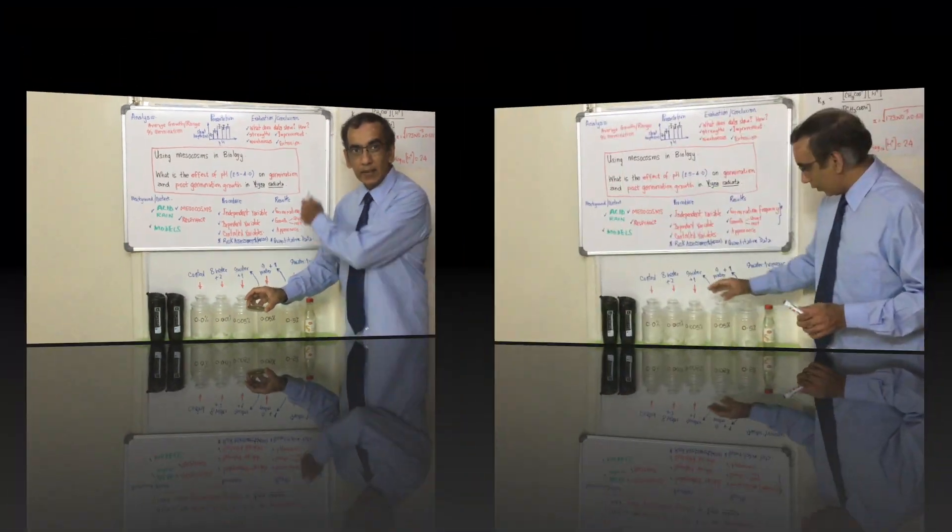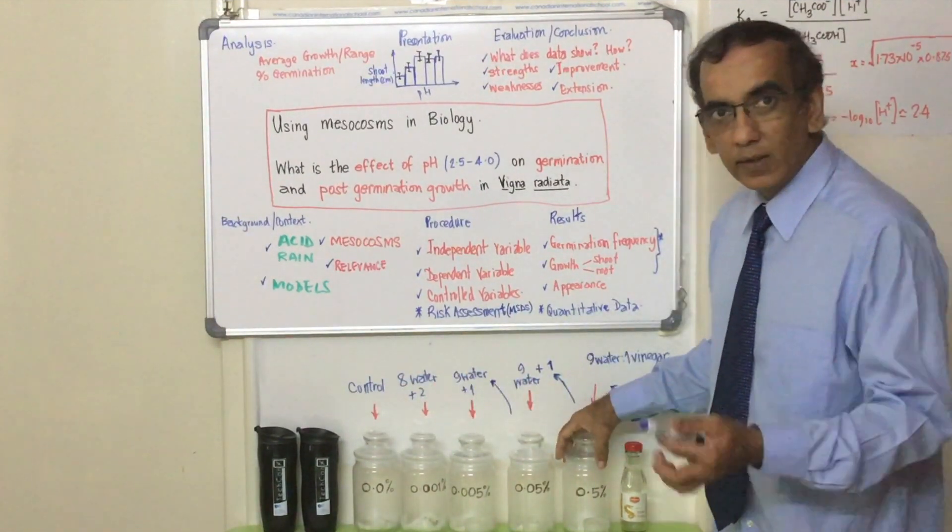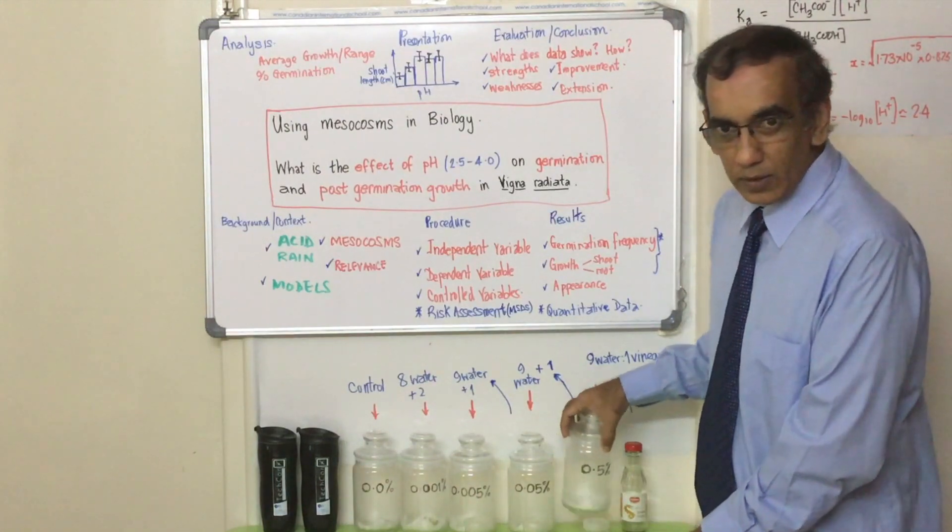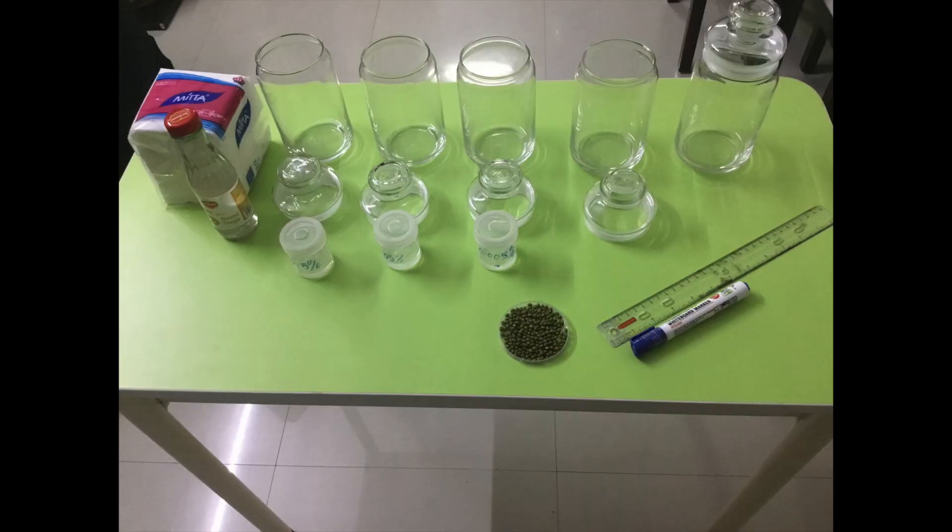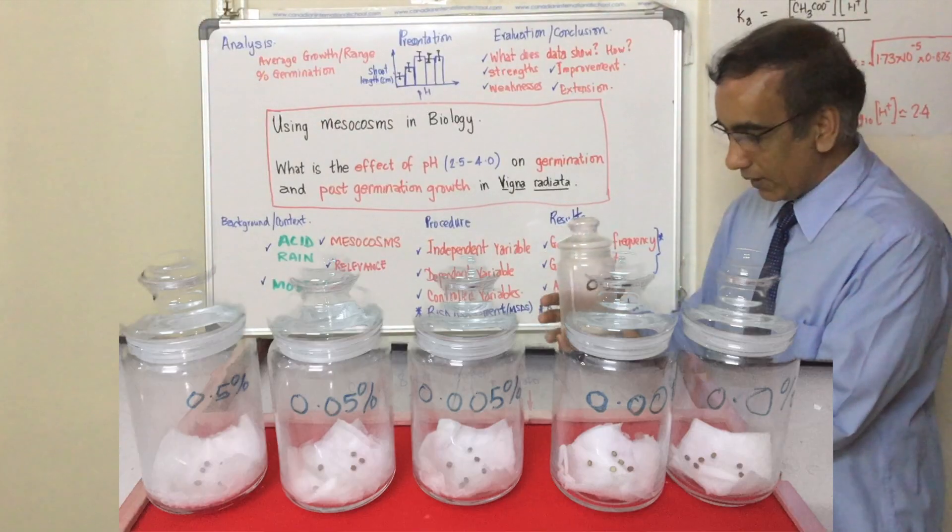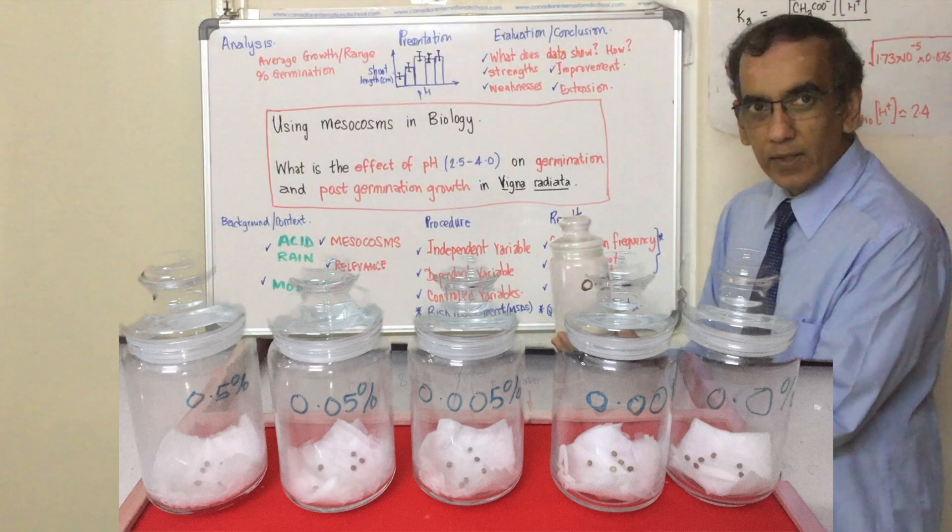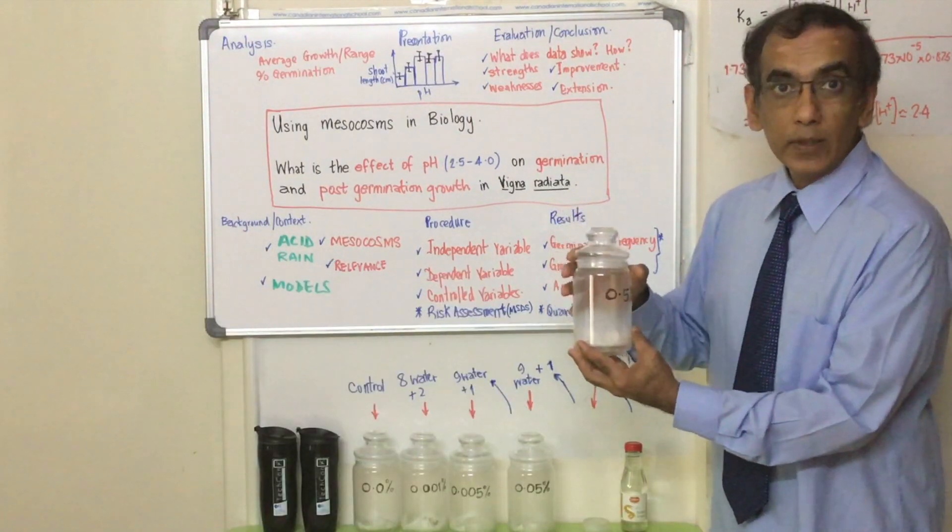Vigna radiata. We are going to use these five little containers which in biology we refer to as mesocosms - small bits of the natural environment brought into the lab, kept in a closed system like this under controlled conditions.